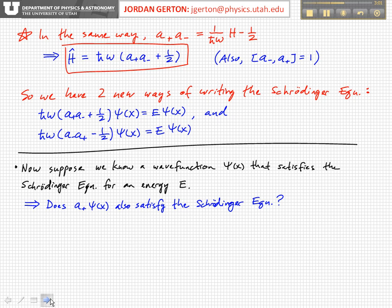The way that we're going to start is, we're going to imagine that we have a wave function that we already know. We have a particular wave function, psi of x, and this actually already satisfies the Schrödinger equation. We imagine that this wave function satisfies the Schrödinger equation for a particular energy E.